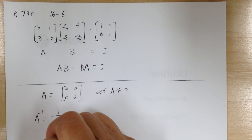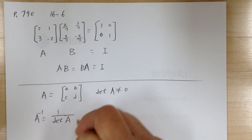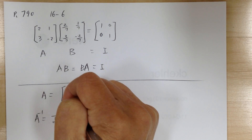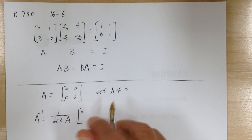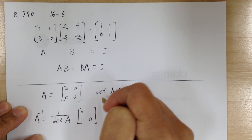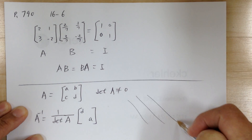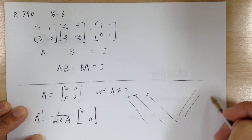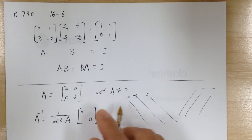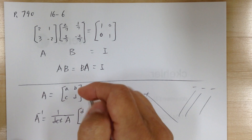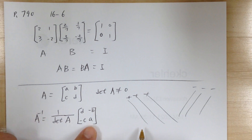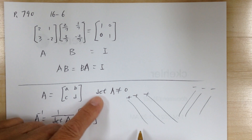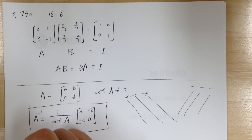The inverse of A equals one over the determinant of A, times a new matrix. For the positive diagonal, you switch the two numbers. For the negative diagonal — the one going the other direction — you multiply by negative one, changing the signs of those entries.